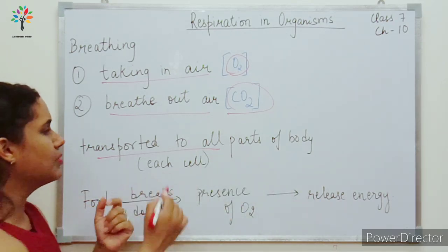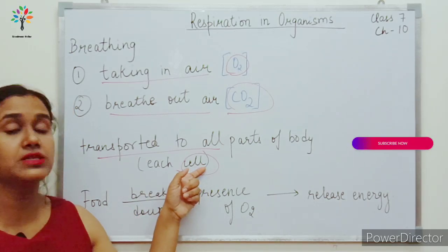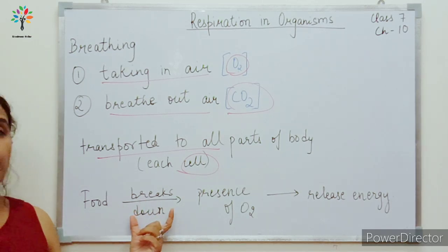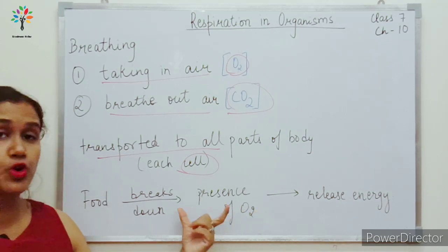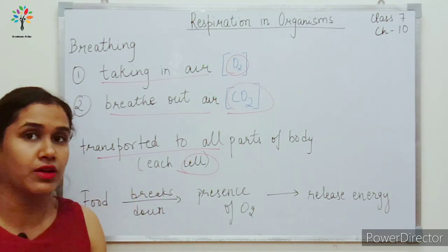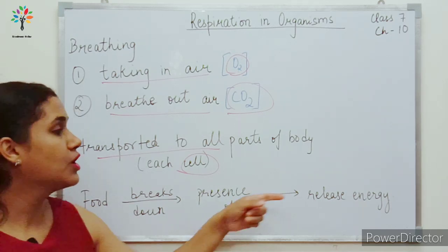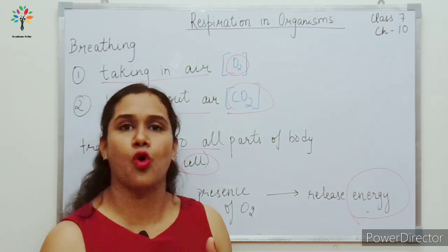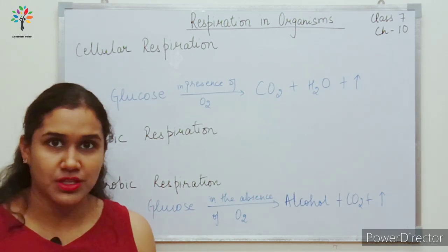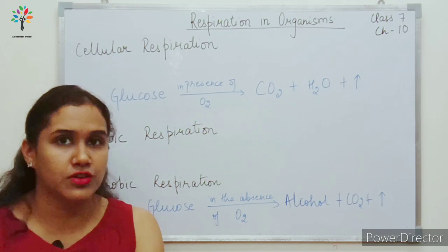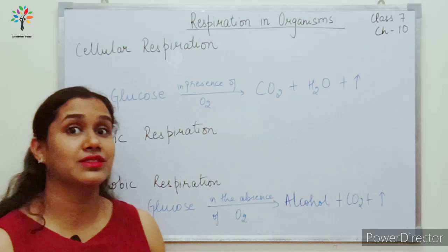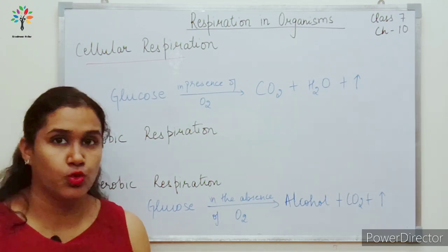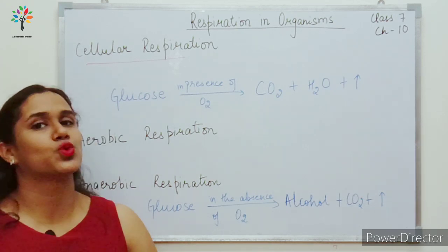When we breathe in, the air is transported to all parts of the body, meaning every cell receives it. Each cell has already-digested food which is broken down in the presence of oxygen. In this process of breaking down digested food in the presence of oxygen, energy is released. This energy is utilized by our body to perform all functions. This process of breakdown of food with the release of energy in the cell is known as cellular respiration.